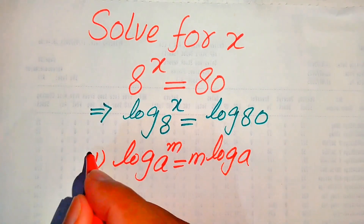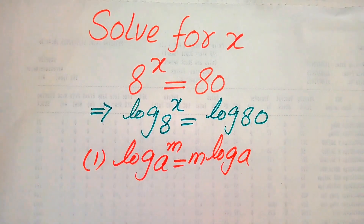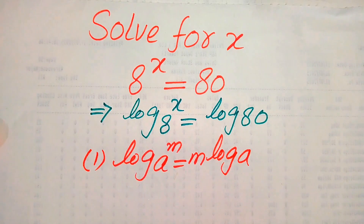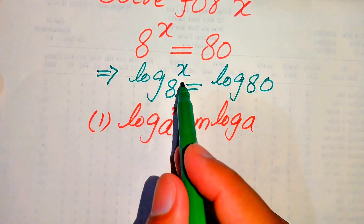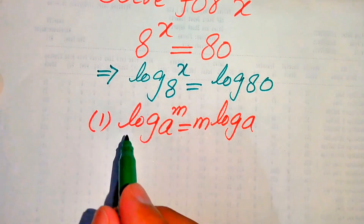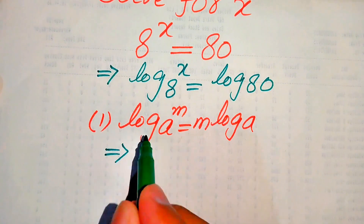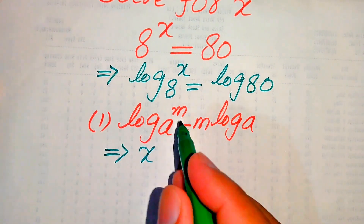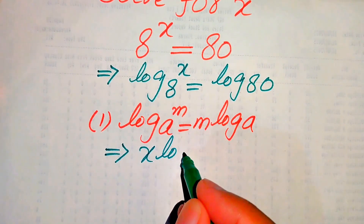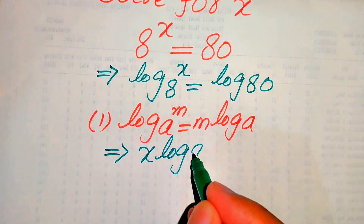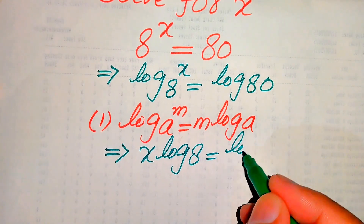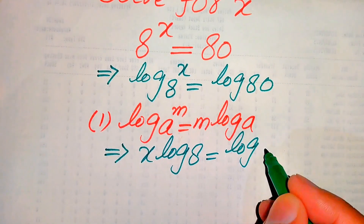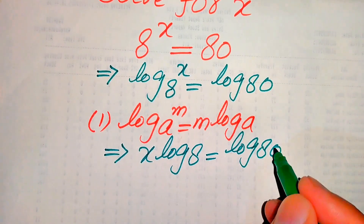According to this first property of log, we write our above equation by moving this exponent x to the front of the log. So the above equation is written as x times log 8 equals log of 80.